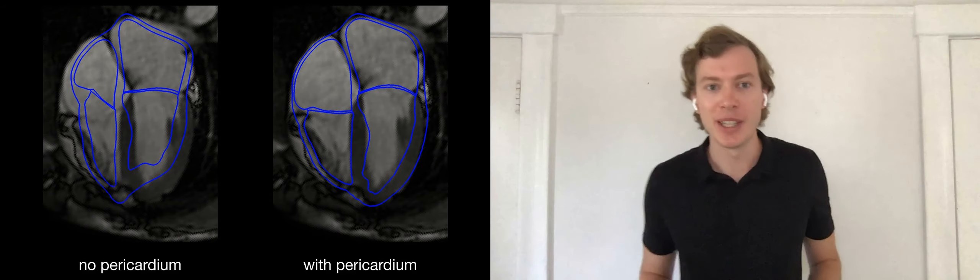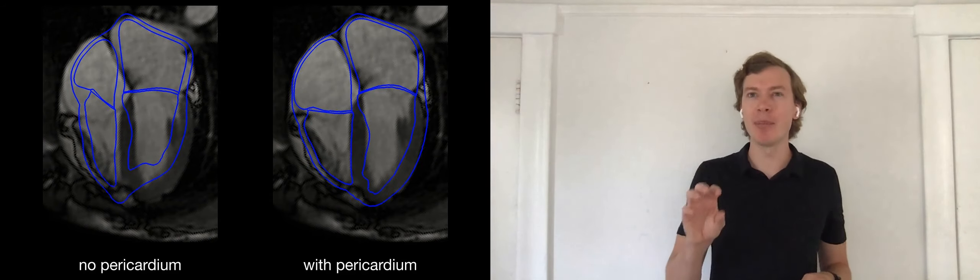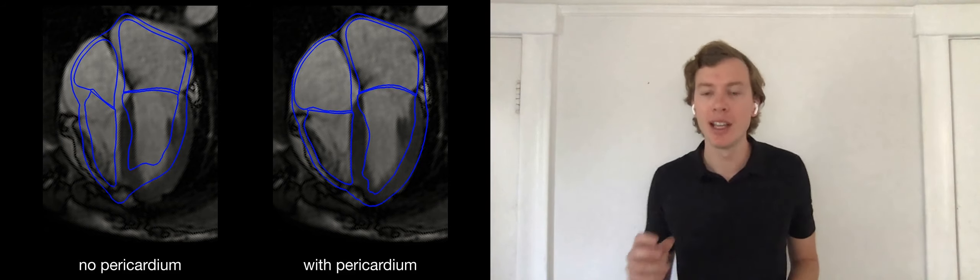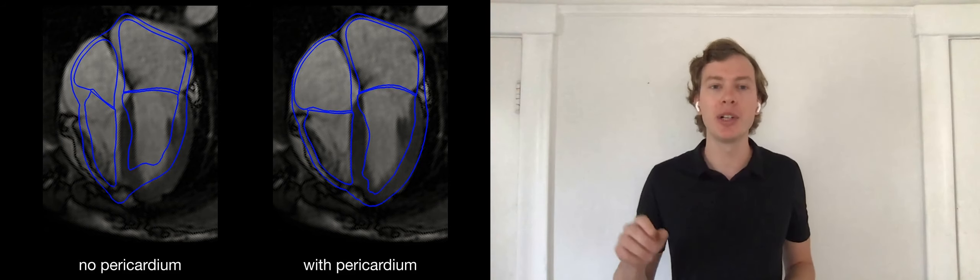So let's test our hypothesis. How do pericardial boundary conditions influence cardiac contraction? So here we compare a medical image of the fully contracted heart to the prediction of our model shown here in blue.